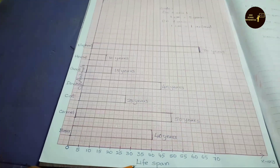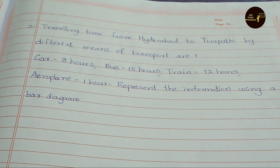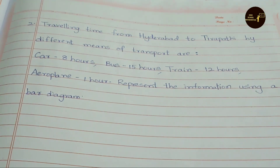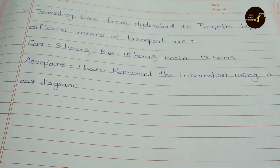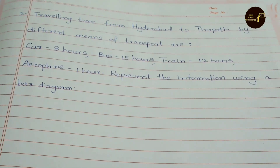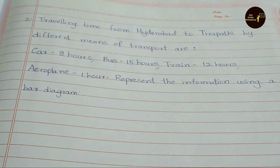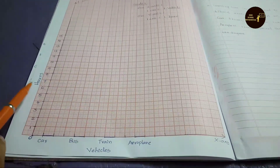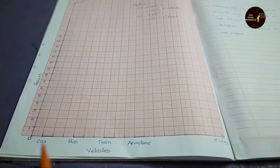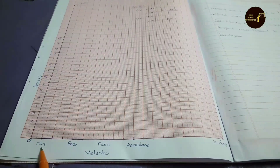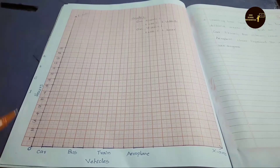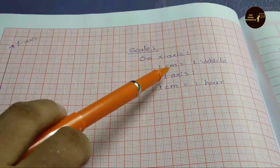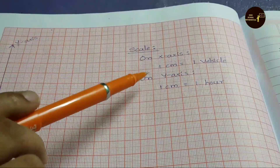See now question number 2: Travelling time from Hyderabad to Tirupati by different means of transport — Car 8 hours, Bus 15 hours, Train 12 hours, Aeroplane 1 hour. Represent the information using a bar diagram. Here we are going to draw a vertical bar diagram. On X-axis we have taken vehicles, 1 cm equals 1 vehicle name. On Y-axis we have taken hours, 1 cm equals 1 hour.